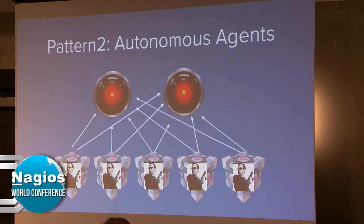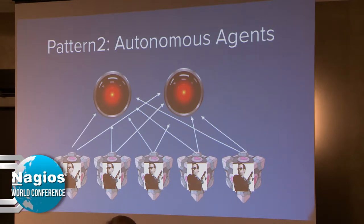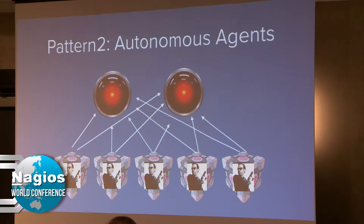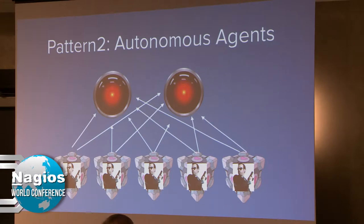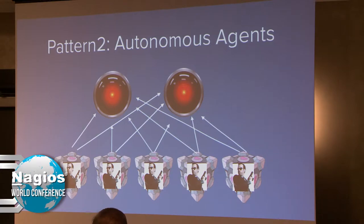Not only can we get data on the order of seconds, but we can point our agents to multiple upstream data collectors — one for alerting and another for visualization. So we can offload visualization to a second system and not waste cycles on the Nagios box having to extract and modify RRD tool files.